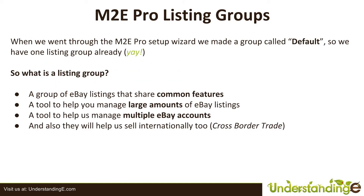As you may remember, when we first went through the M2E Pro setup wizard, we had to create a listing group — a default one called Default — so we already have one listing group ready. A listing group is effectively a group of eBay listings that all share common features or common policies. It's also a tool to help you manage large amounts of eBay listings and multiple eBay accounts — and that's a big one, because that's how you can manage multiple eBay accounts and still have some hair left, and keep your sanity because you'll group them out.